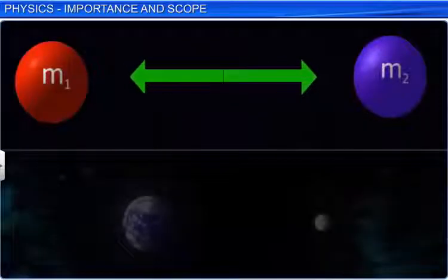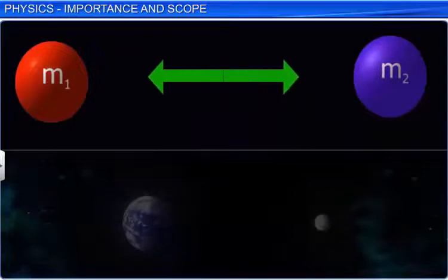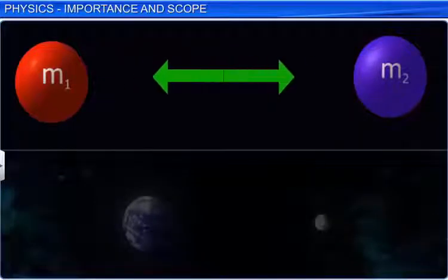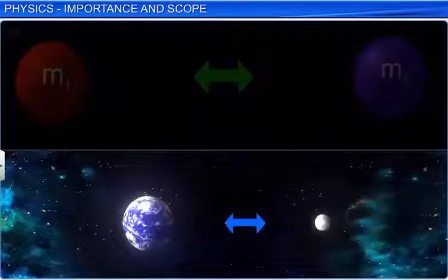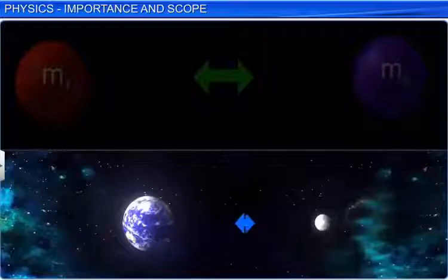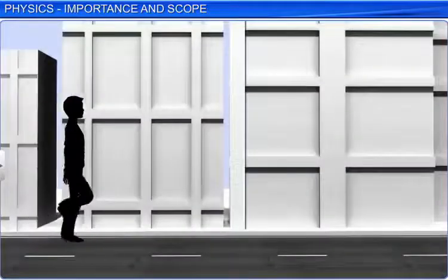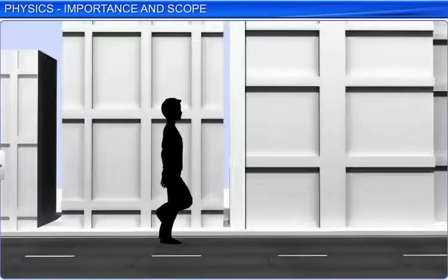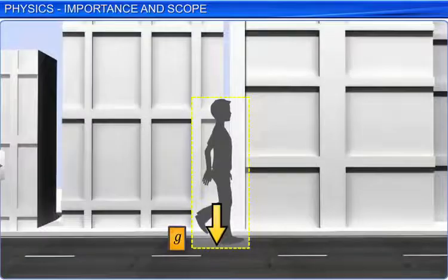The gravitational force is the force of mutual attraction between any two objects by virtue of their masses. It is a universal force meaning all objects in the universe exert a gravitational force on each other. We are able to stand or walk due to Earth's gravitational force exerted on us by the Earth.